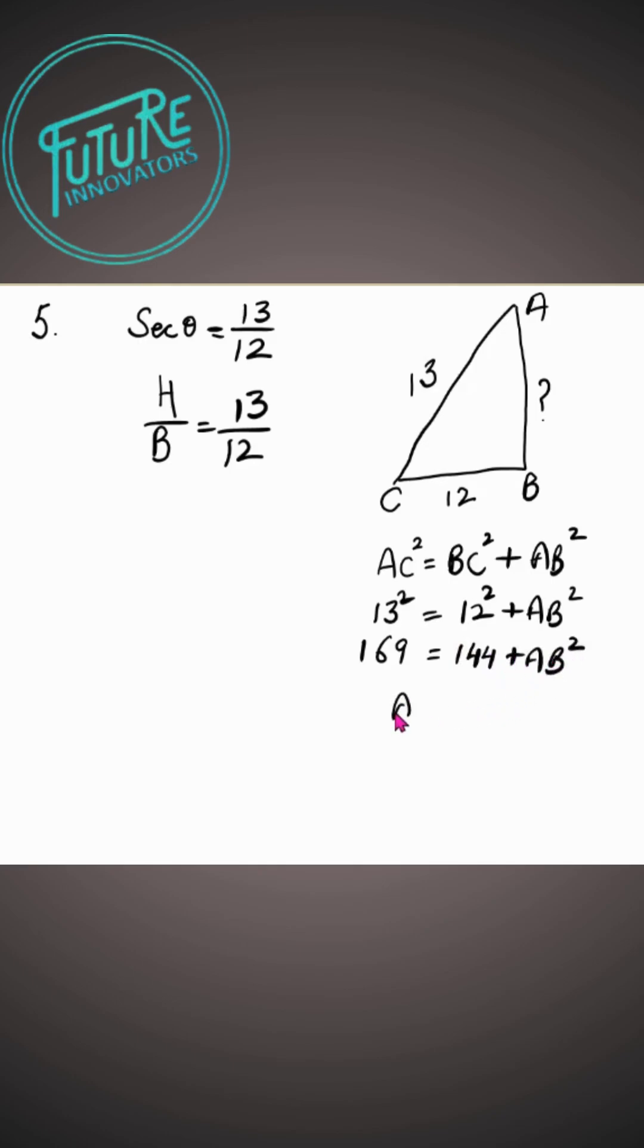Now we can find out AB square is equal to 169 minus 144, that is 25. AB is equal to 5.